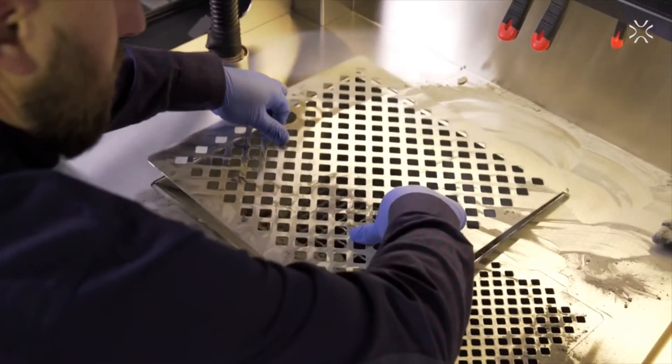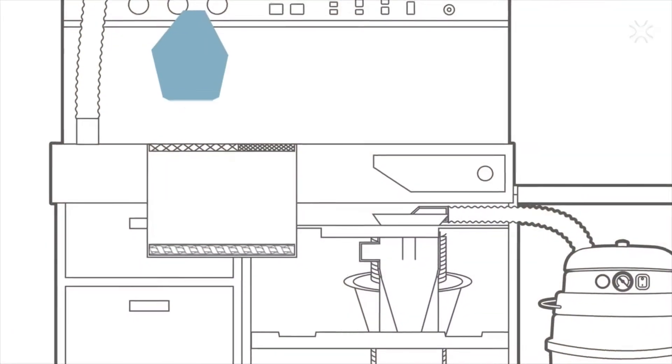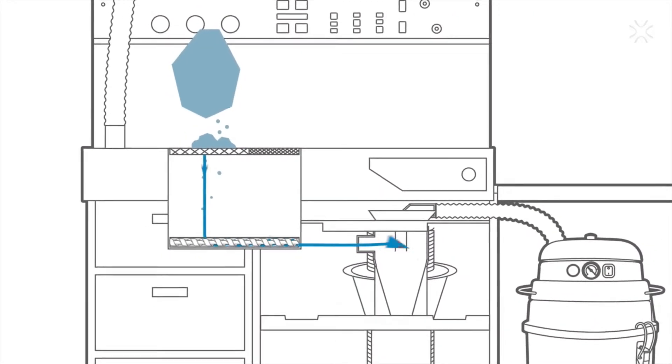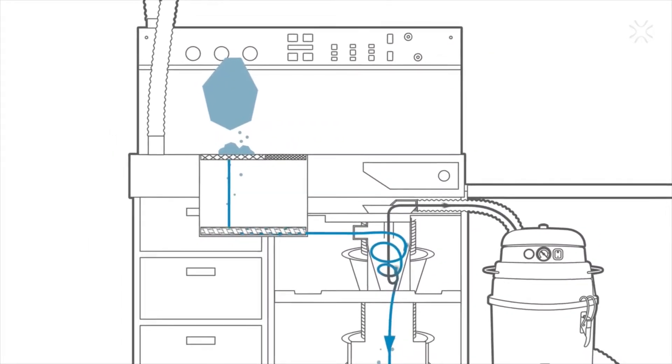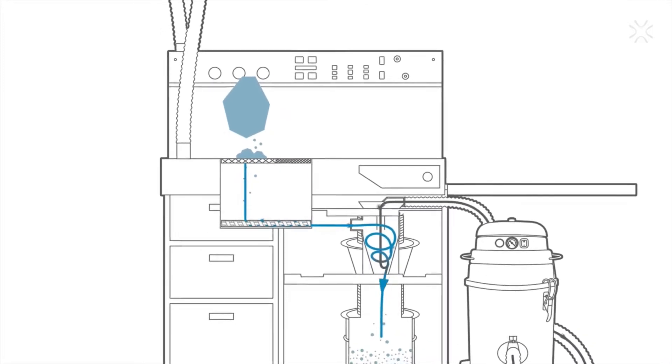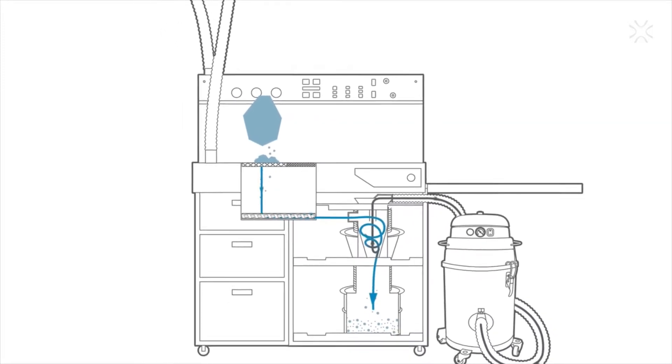After initial depowdering, put the print aside on the worktop and push the remaining powder into the powder chamber. On its bottom, there is a powder feeding screw mechanism that transports all the powder to the sifting module where it will be recycled.